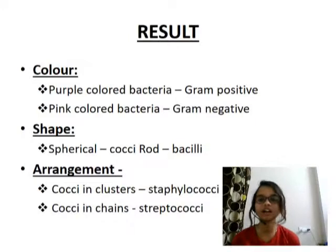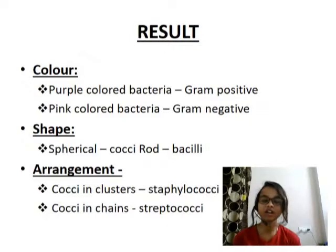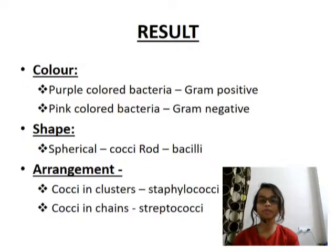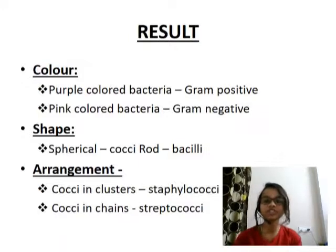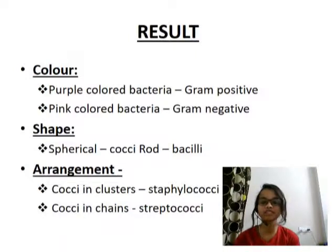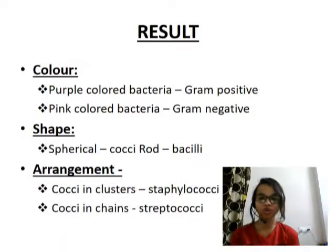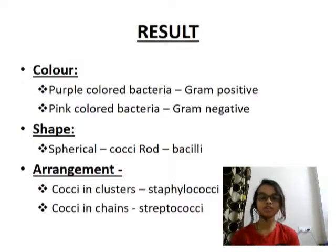As a result of Gram staining, purple-colored bacteria are termed Gram positive and pink or red-colored bacteria are termed Gram negative. Regarding shape, spherical bacteria are called cocci and rod-shaped bacteria are called bacilli. In terms of arrangement, cocci that come in clusters are known as staphylococci, and cocci that come in chains are known as streptococci.